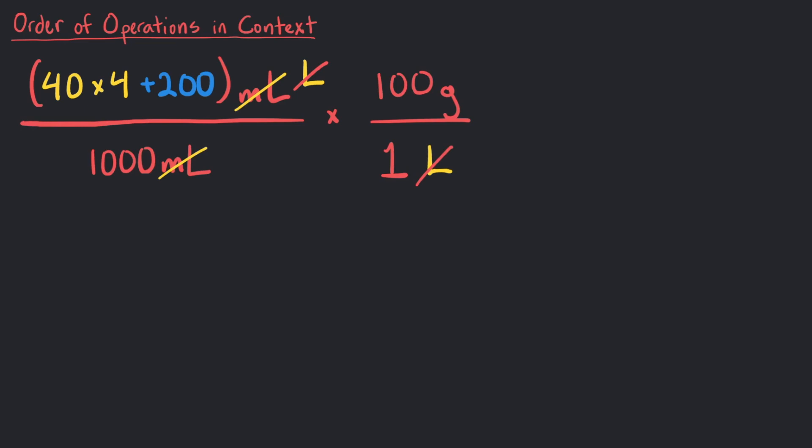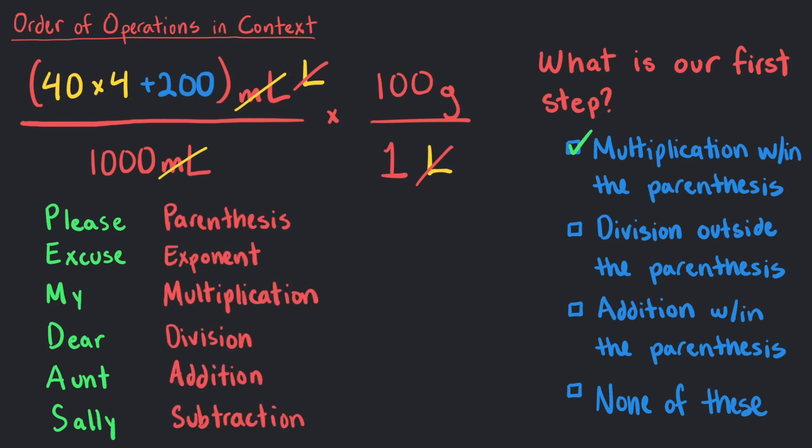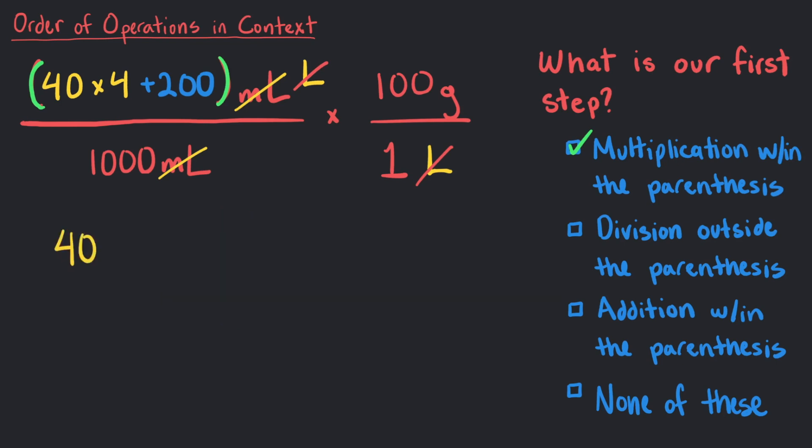Finally, we can use the order of operations to solve our expression. What is our first step? Exactly, we can recall PEMDAS or please excuse our dear Aunt Sally to remember that the first step is P, standing for parentheses. We want to solve everything within the parentheses first. However, should we solve the multiplication or the addition first? Well, going down the list of PEMDAS, multiplication comes before addition. So we will solve 40 times 4 and then add the 200 milliliters.